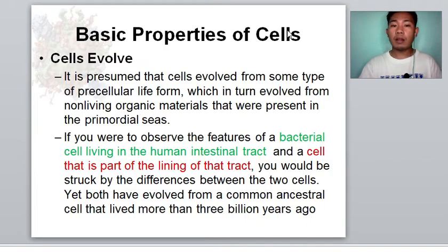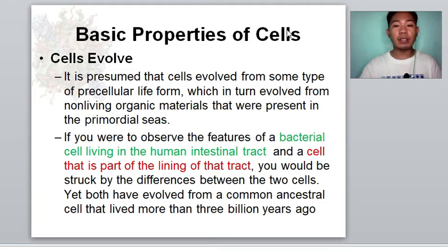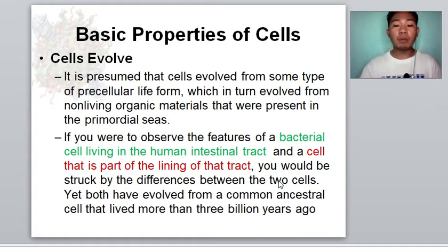Cells are also evolving. It is presumed that cells evolved from some type of pre-cellular life form, which in turn evolved from non-living organic materials present in the primordial seas. If you were to observe the features of a bacterial cell living in the human intestinal tract and a cell that is part of the lining of that tract, you would be struck by the differences. Yet both have evolved from a common ancestral cell that lived more than 3 billion years ago — recalling the term 'primordial soup.'